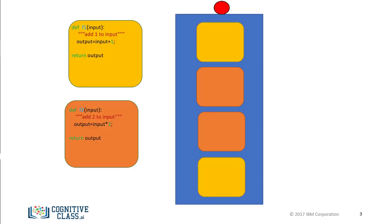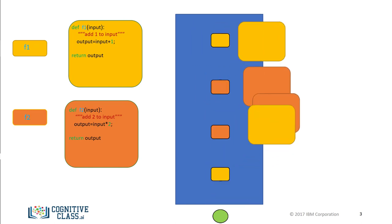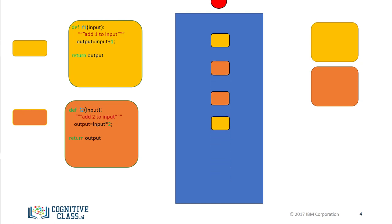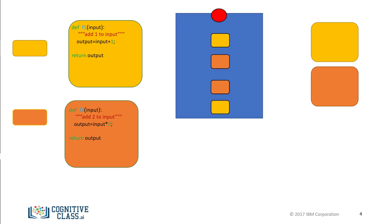Let the orange and yellow squares represent similar blocks of code. We can run the code using some input and get an output. If we define a function to do the task, we just have to call the function. Let the small squares represent the lines of code used to call the function. We can replace these long lines of code by just calling the function a few times. Now we can just call the function — our code is much shorter, and the code performs the same task.